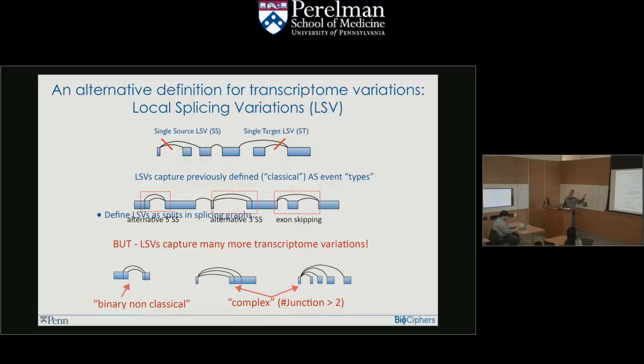There are other appealing reasons to use this LSV definition. Isoform quantification is very hard because you don't know which read came from which isoform. This LSV definition also corresponds directly to biology — every time you see a split, it represents a spliceosome decision about which of those possible options to choose and in what ratio. The graph-based definition corresponds directly to biology and to experimental evidence. We use junction-spanning reads from RNA-seq data that span across junctions to give us hints for what those ratios should be, and this is what we use in the algorithm.